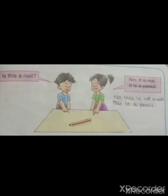Is this a nail? A boy is asking a question: Is this a nail? Now the girl is giving an answer: No, it is not. It is a pencil. Children, do correction over here. Cut these sentences and write down the correct answer. You know how to give an answer in a negative form.